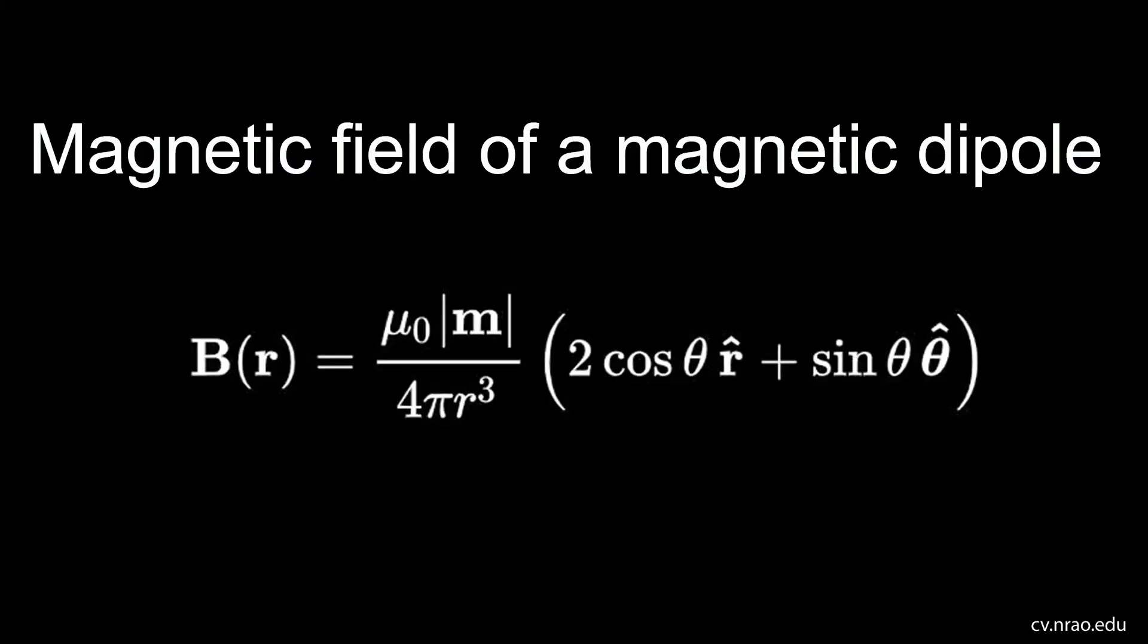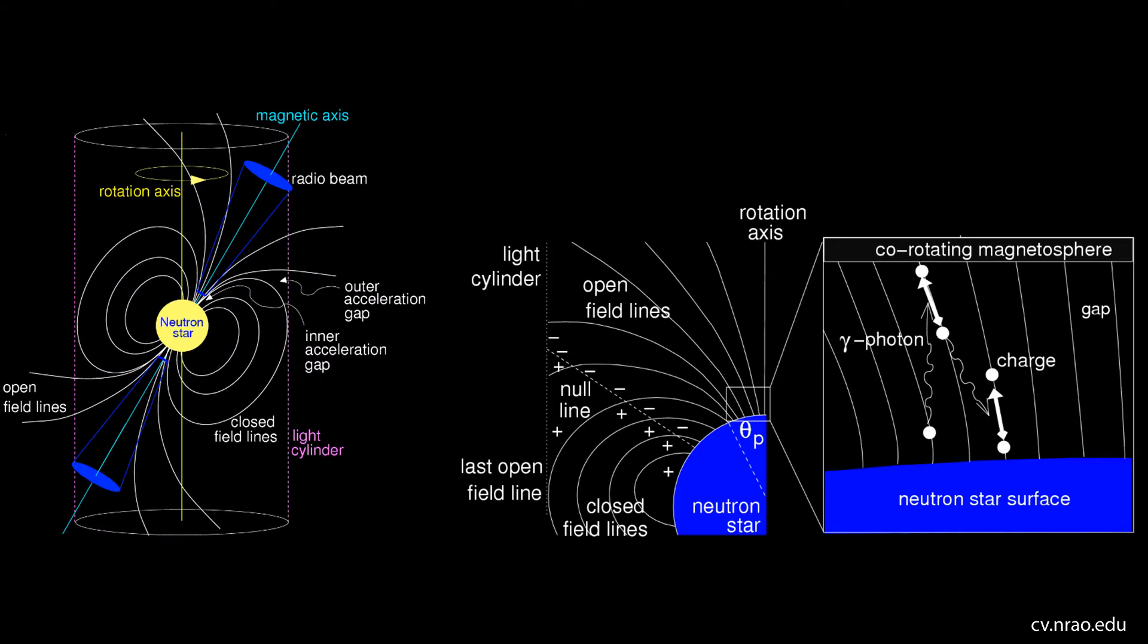In these models, the dipole axis of the magnetic field is tilted with respect to the spin axis. It has been shown that rotating neutron stars cannot be surrounded by a vacuum.